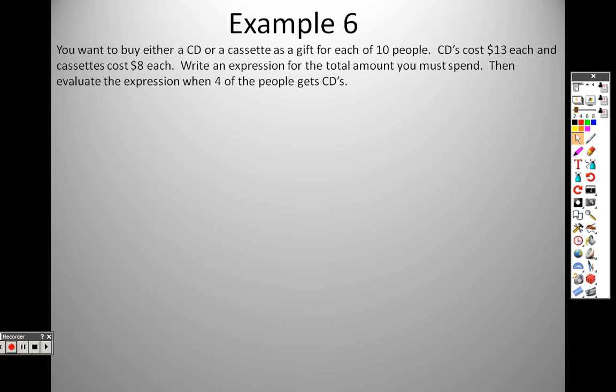Example 6. You want to buy either a CD or a cassette as a gift for each of 10 people. CDs cost $13 each, and cassettes cost $8 each. Write an expression for the total amount you must spend, then evaluate the expression when 4 of the people get CDs. So we are going to make CDs be x, we're going to make cassettes be y. You are buying CDs and the CDs cost $13, since 13 is what the CDs cost it's 13x. The cassettes cost $8, that's why it is 8y. And to find what the total price would be, we need to add those two items together because we're talking about the total.